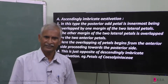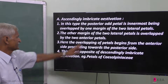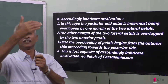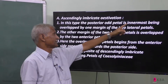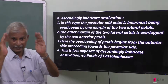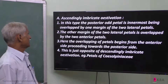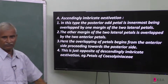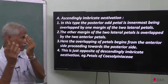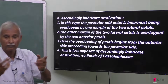Ascending and descending Imbricate aestivation. The posterior odd single petal is the innermost, being overlapped by one margin of the two lateral petals. The other margin of the two lateral petals is overlapped by the two anterior petals. This is called ascending Imbricate aestivation.